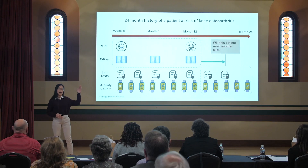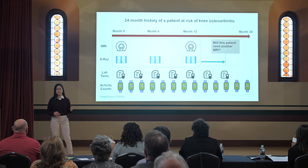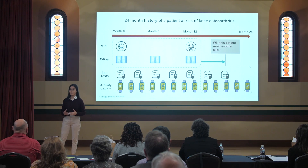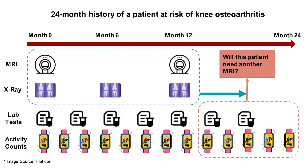At the top, MRI is obviously the most reliable information but expensive and time-consuming, so it can only be done once a year. At the bottom is wearable track activity counts — less indicative, but can be collected at a much higher frequency rate.